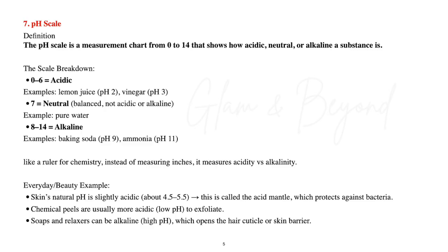Everyday beauty examples: skin's natural pH is slightly acidic at about 4.5 to 5.5 — this is called the acid mantle, which protects against bacteria. Chemical peels are usually more acidic with a low pH to exfoliate. Soaps and relaxers can be alkaline with a higher pH, which opens the hair cuticle or skin barrier.